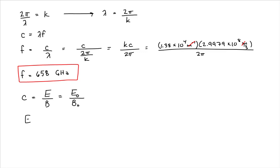When we rearrange this, we get the amplitude of the electric field is equal to the product of the amplitude of the magnetic field times the speed of light.